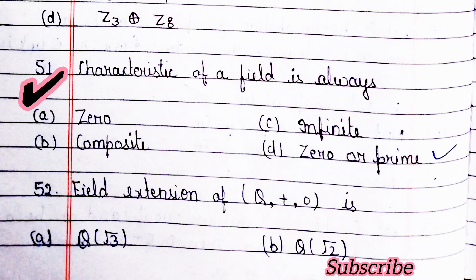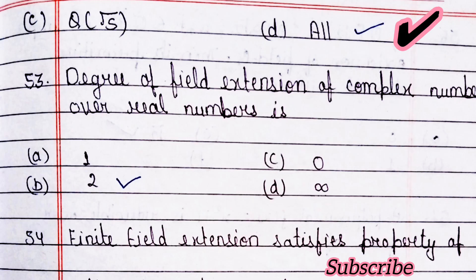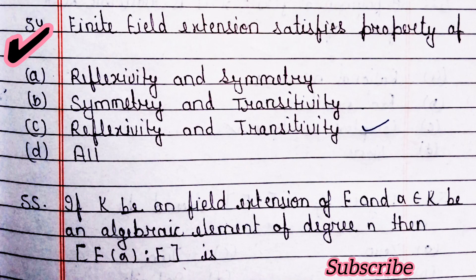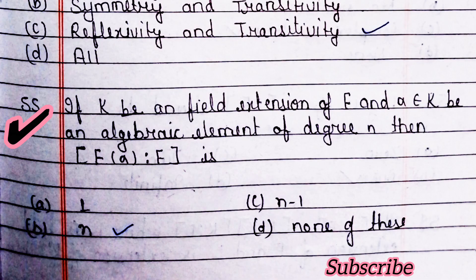Next question: the characteristic of a field is always 0 or prime — option D is right. Field extension of this is — option D is right, all of the above are correct. The degree of the field extension of complex numbers over real numbers is 2 — option B is right. A finite field extension satisfies property C — option C is right.